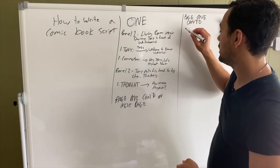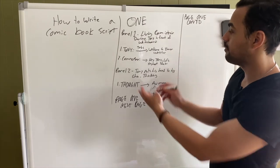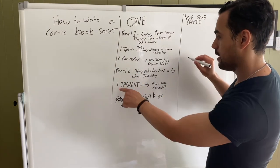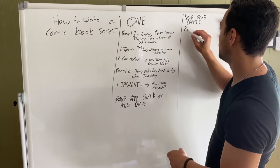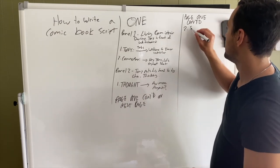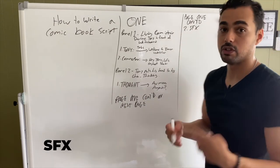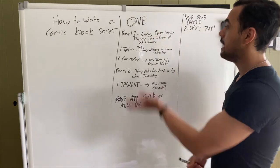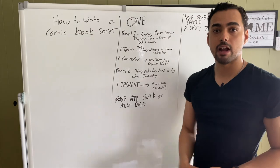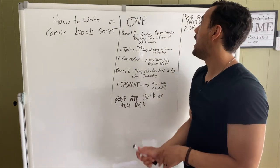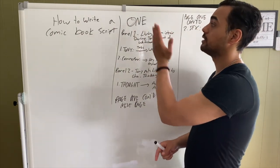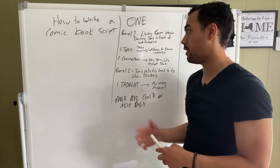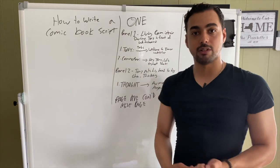Let's say this is a continuation of panel two. Instead of "1," it's going to be "2," and it's going to be "SFX" for sound effects, and we'll say "Zap." So that's how you format a comic book script. You just continue doing this from page one, two, three, all the way to whatever page you end on. And that's how it's all done.